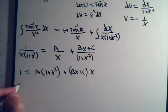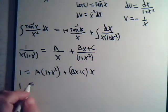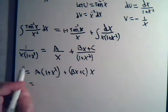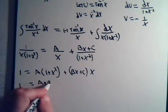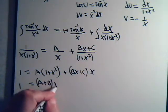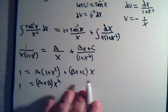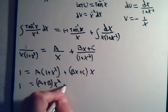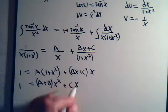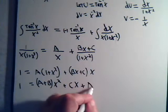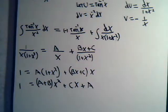We'll have 1 equals a times 1 plus x squared plus bx plus c times x. And we collect like terms of 1 will equal. Here's an x squared and here's an x squared. We have a plus b times x squared. And we have a c times x. And any constants here? Plus a.